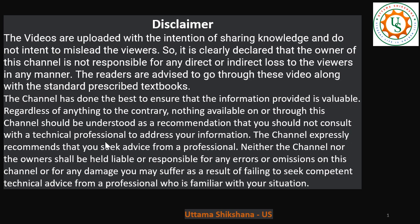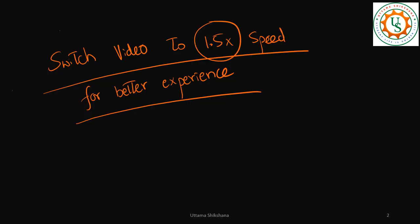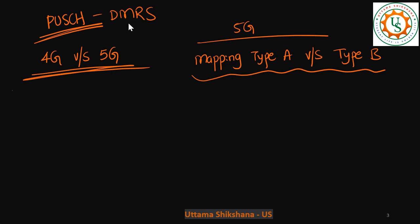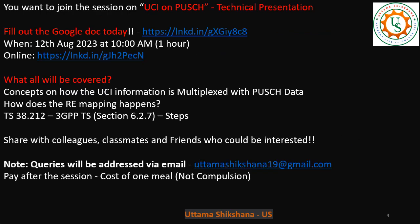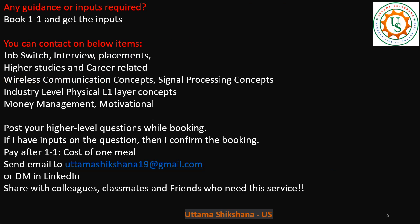Hey guys, welcome back. In this video I want to talk about one important topic with respect to PUSCH DMRS. We will see the allocations, what are the differences between 4G and 5G, and also in case of 5G especially we will talk about the difference between mapping type A and mapping type B, and all the related concepts.